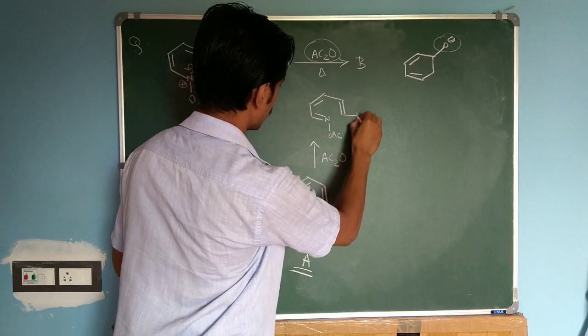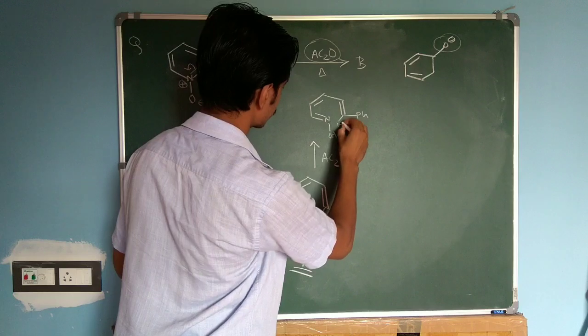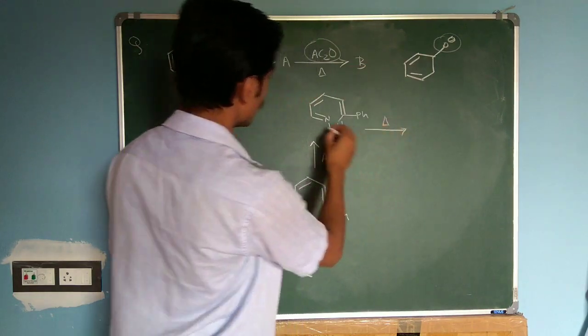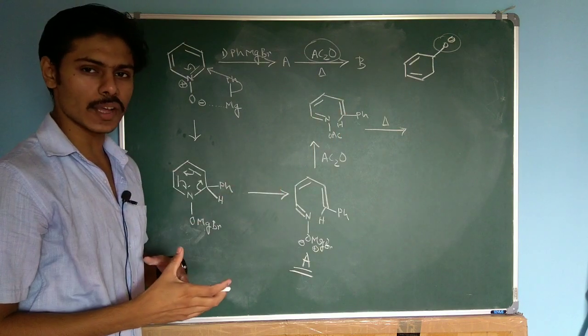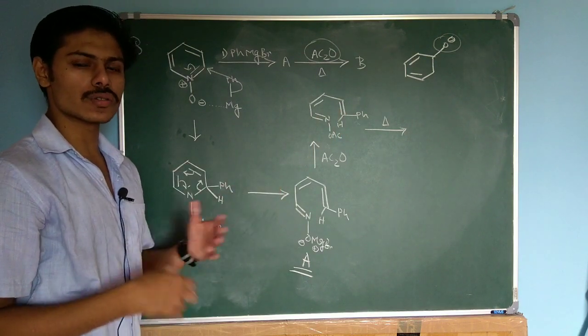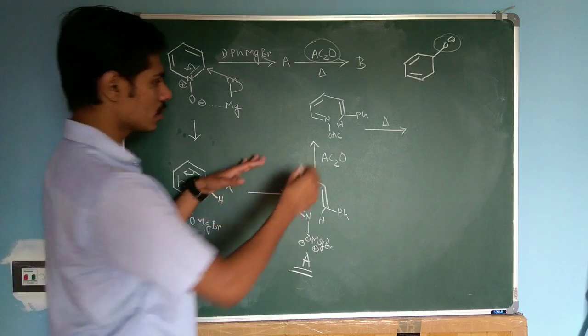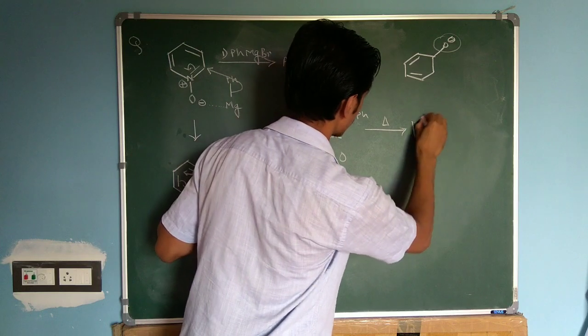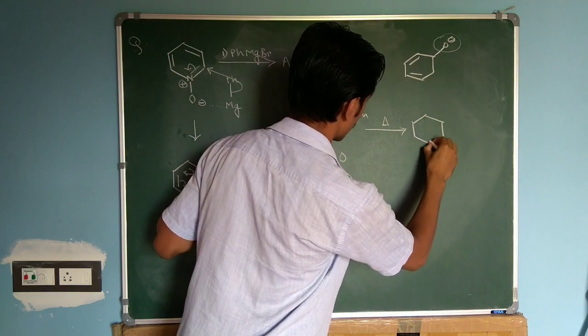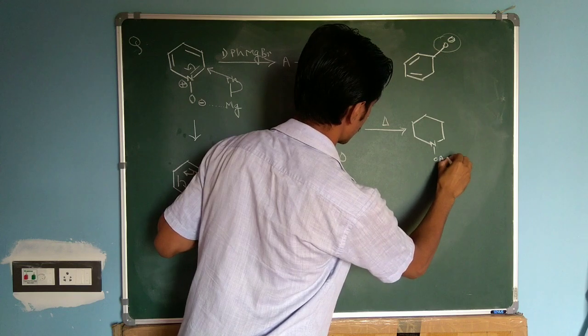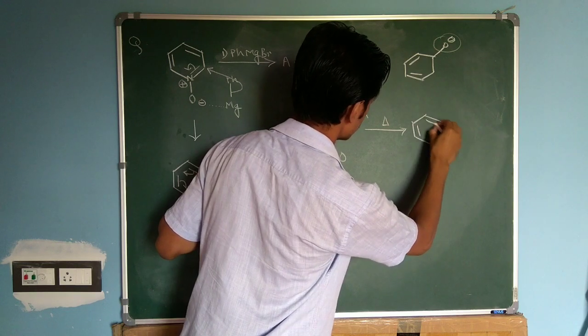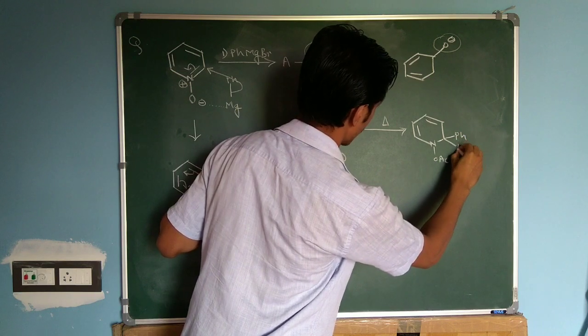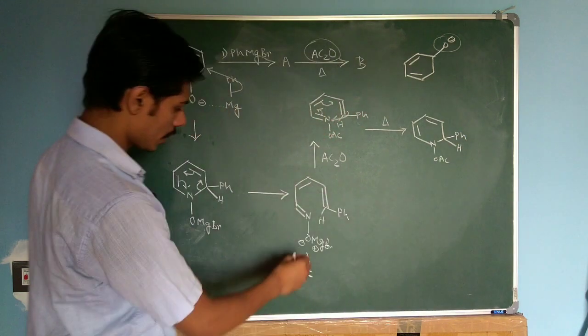And finally, heating is given. So this substrate now again can recombine to undergo an electrocyclic ring closing reaction. And if this occurs, you will get a ring like this: OAc here, and here you have phenyl, here you have hydrogen.